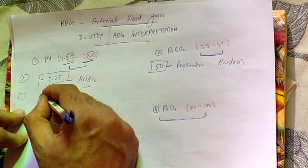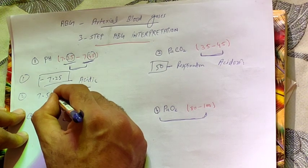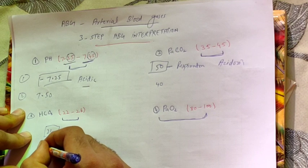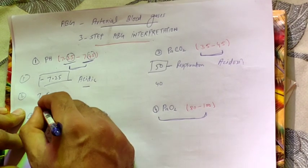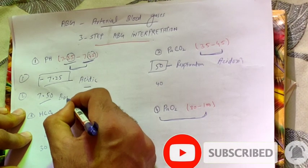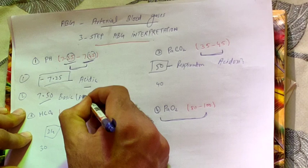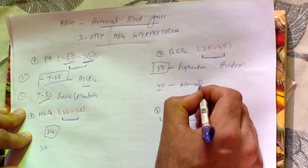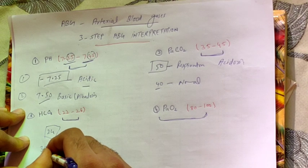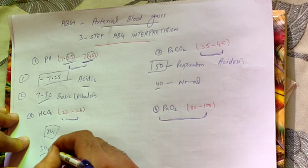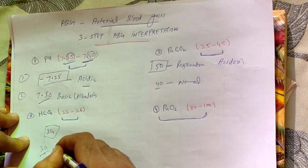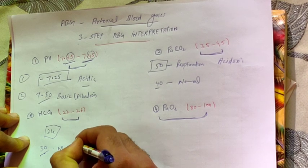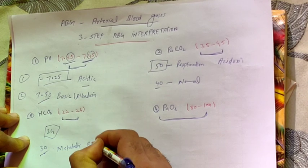Example two: pH 7.50, CO2 40, HCO3 30. First, it is on the basic side — alkalosis. Carbon dioxide is within normal limits, so no respiratory component. Bicarbonate is 30, which is more than normal (22 to 26). Since bicarbonate is elevated and is a basic substance, this is metabolic alkalosis.